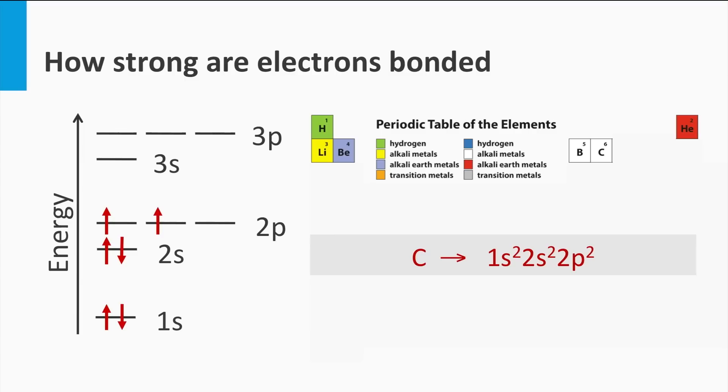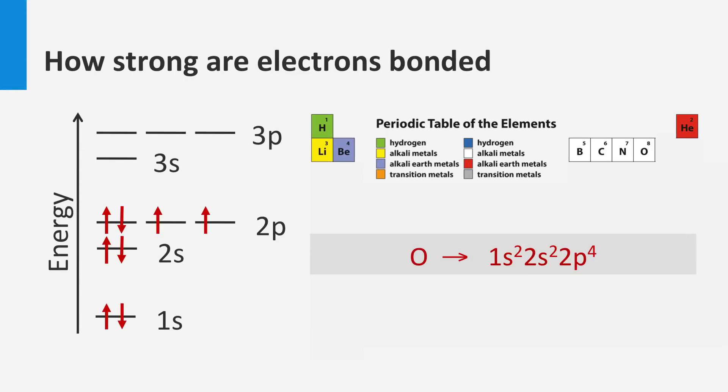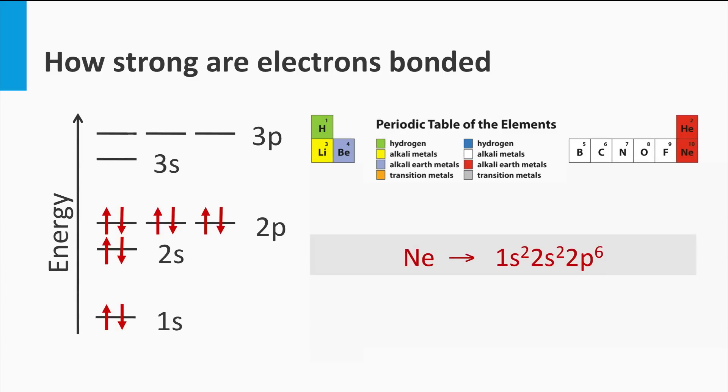The next element is nitrogen. It has seven electrons in orbit around the nucleus and can fill up to three electrons in the 2p state. The next element is oxygen. It has eight electrons in orbit around the nucleus and can fill up to four electrons in the 2p state. Fluorine has nine electrons in orbit around its nucleus and can fill up to five electrons in the 2p states. Neon has 10 electrons in orbit around its nucleus and fills up the 2p fully with 6 electrons. Neon fills up fully the first and second shell.